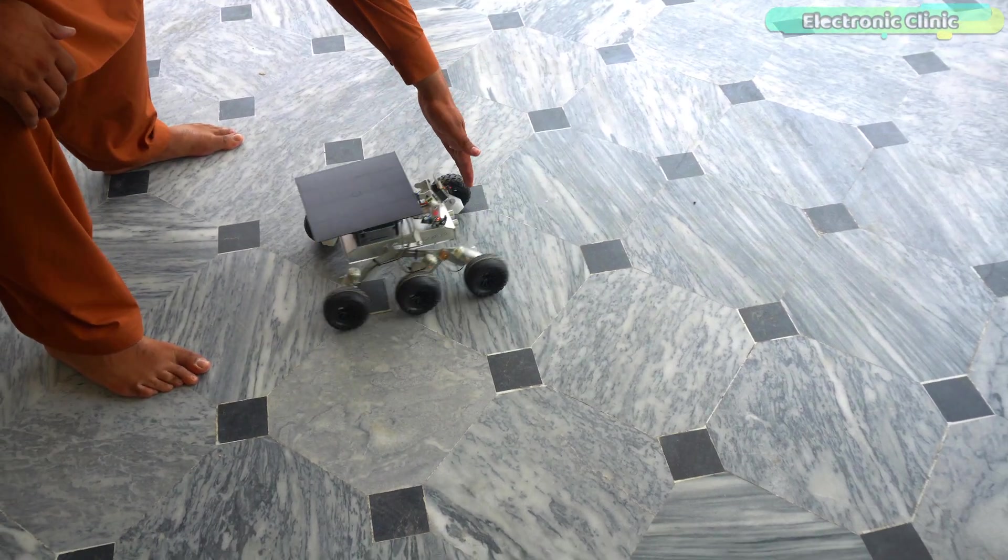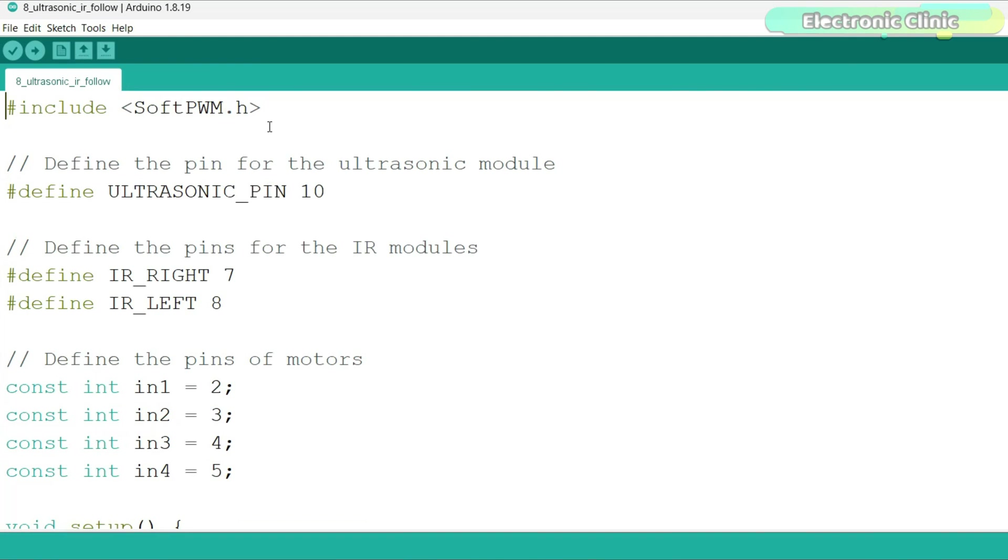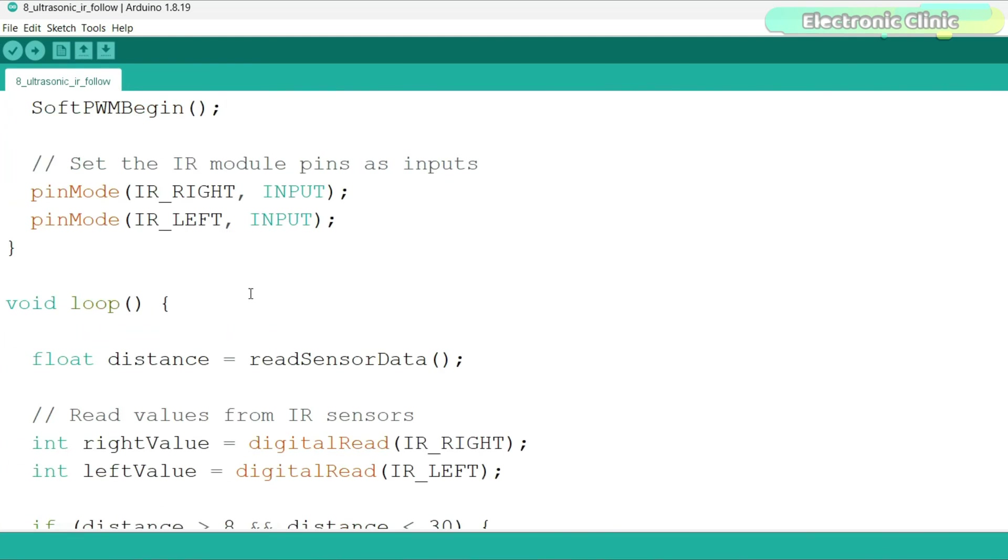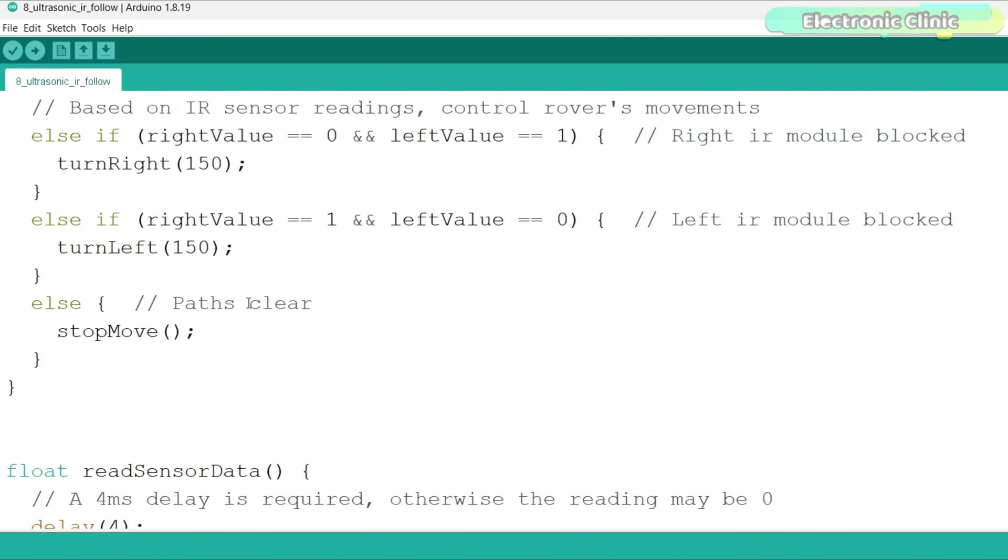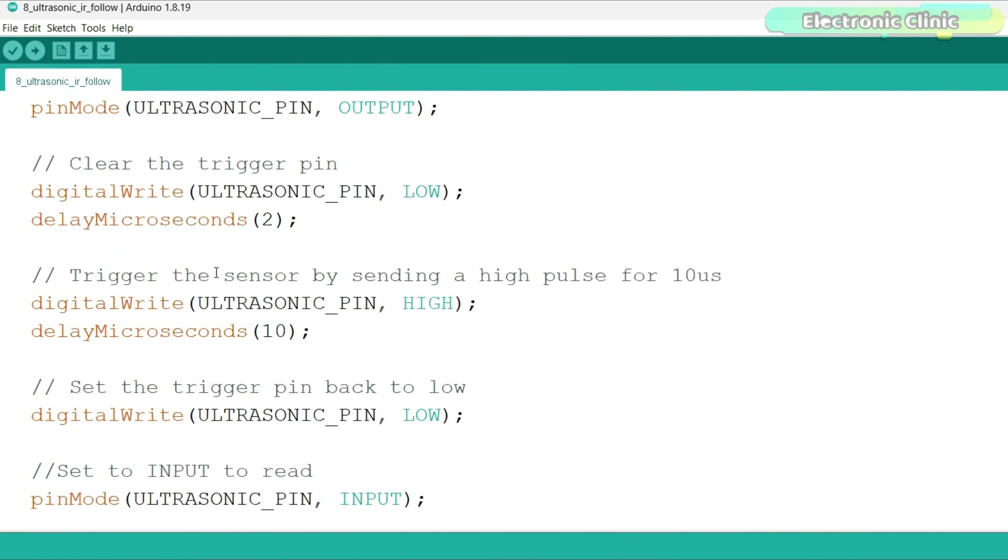Now, let's make the Galaxy RVR rover to follow an object. You can see this is the same exact program with some minor changes. This time, instead of avoiding any object, it follows that object. Let's upload this program.